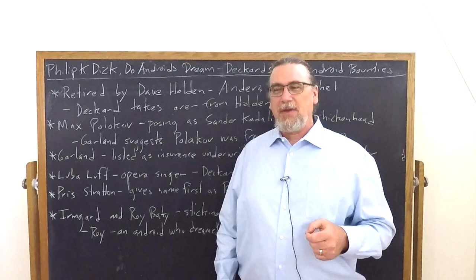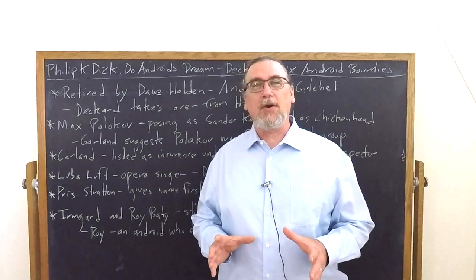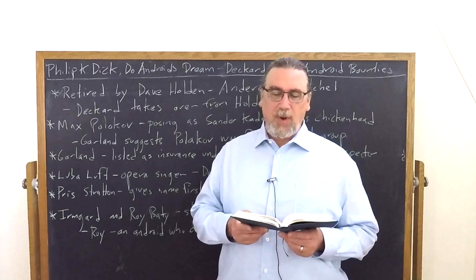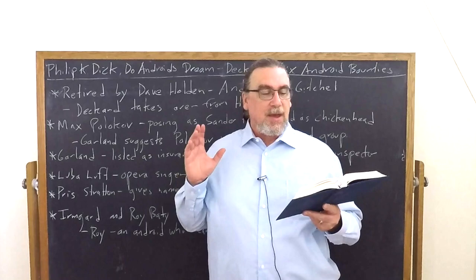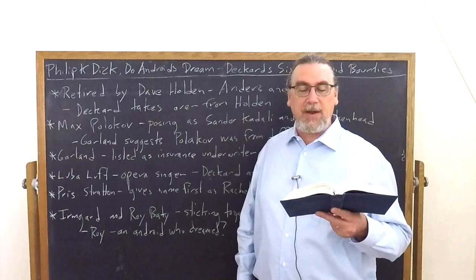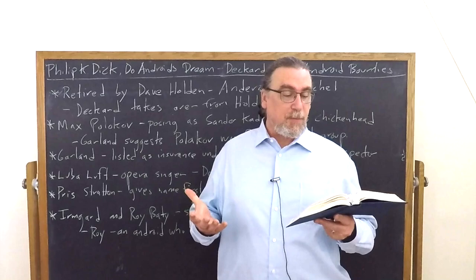Our story begins with Deckard getting to step into the job as senior bounty hunter because the previous senior bounty hunter, Dave Holden, was able to retire two of the eight escaped androids and then was taken out of commission by the third one. So we begin here in chapter three, learning about these as Deckard unlocks his office. Superior police inspector Harry Bryant says, 'Meet me at 9:30 in Dave Holden's office.' Then he tells him Holden is in Mount Zion Hospital with a laser track through his spine.